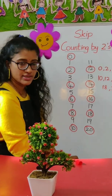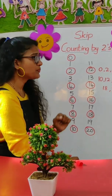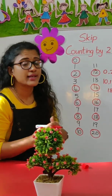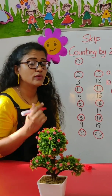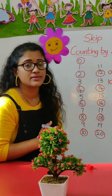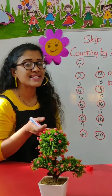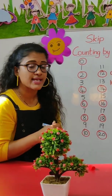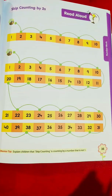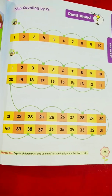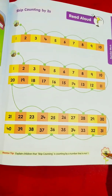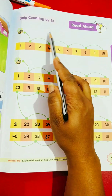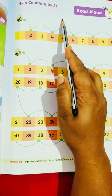Hope you all have understood. Keep practicing this so that you will be perfect. Now let's see in your book what examples they have. Children, open your book seven, page number thirty-five. Now skip counting by twos.